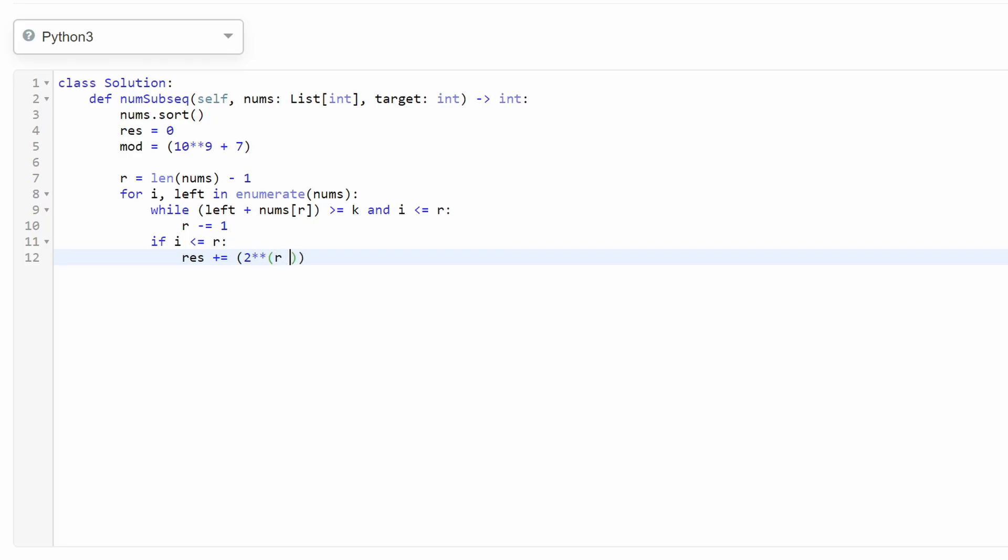And that's going to be right minus i. Basically, the size of our window minus one, because the leftmost value placed at index i has to be included in the subsequence. We're counting all subsequences that definitely contain this value at index i.